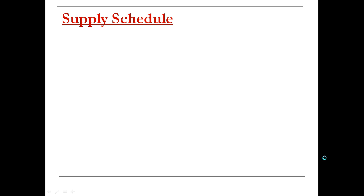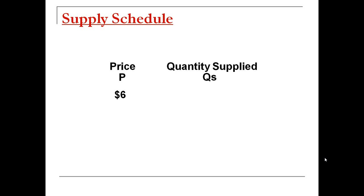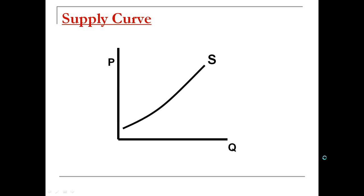Now we're going to look at a numerical representation of supply, called a supply schedule — it's just a list of prices and quantities supplied. Looking at the market for screwdrivers: at $6 a screwdriver, suppliers will supply 2; at $7, they supply 3; at $8, they supply 5; at $9, they supply 9. This shows the law of supply, because as price goes up, quantity supplied goes up as well.